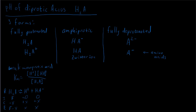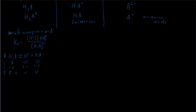We substitute into our equilibrium constant expression and get Ka1 = X² / (F − X). We solve this for X. X is the H⁺ concentration and also equals the HA⁻ concentration. To get the pH, we use pH = −log[H⁺], and since we just found that [H⁺] = X, we can calculate the pH directly.